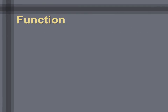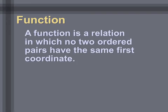Now let's talk about the definition of a function. A function is a special relation — so every function is a relation, meaning every function is a set of ordered pairs. However, a function is a special type of relation where no two ordered pairs have the same first coordinate, or the same X coordinate. No two ordered pairs will have the same X value.